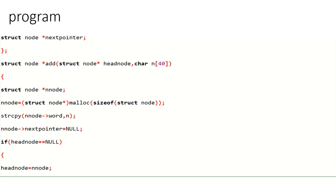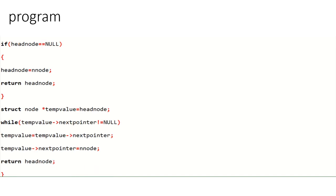strcpy — which means string copy — copies the word into new node's word field. The new node's next pointer address is set to null. If the head node is equal to null, which means the dictionary is empty, then the new node will be equal to the head node and it just returns the head node.